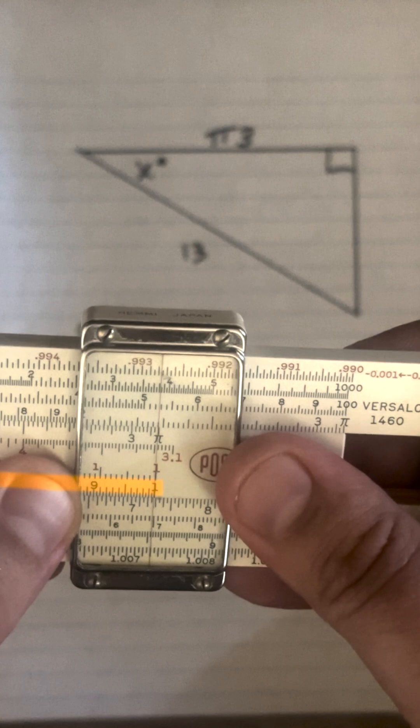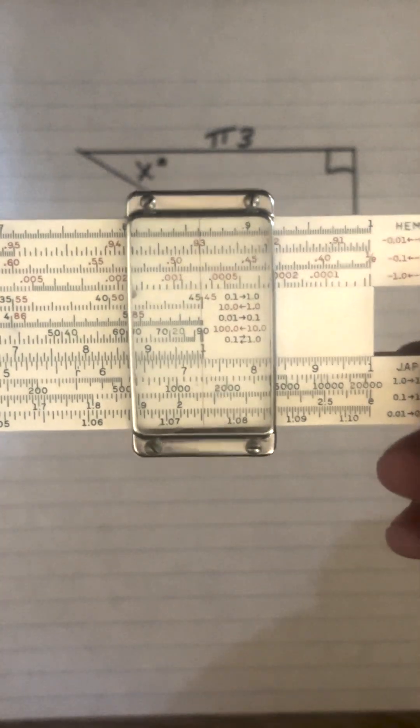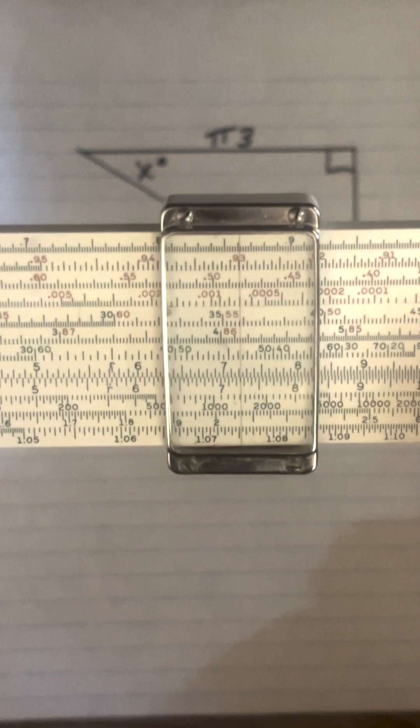So that comes out to pi times 3 over 13. We'll slide over to the right index and we'll flip over to the cosine scales. Now it's an inverse operation, so we know that means to slide the slide back to its normal setting.